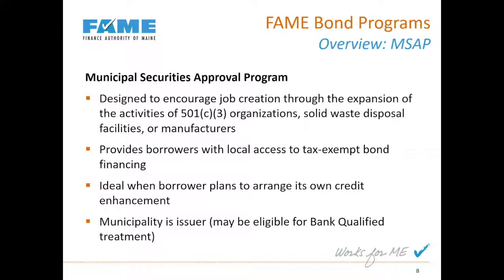The Municipal Securities Approval Program is a corollary of the Revenue Obligation Securities Program. The only real difference is who the issuer is — in this case, it's the municipality in which the business is located, such as the city of Auburn. FAME is still involved in the process, but the municipality is the issuer of record. This has a slight difference in FAME's fees and also allows the municipality, which may not issue significant numbers of bonds in any given year, to potentially be eligible for bank-qualified treatment.